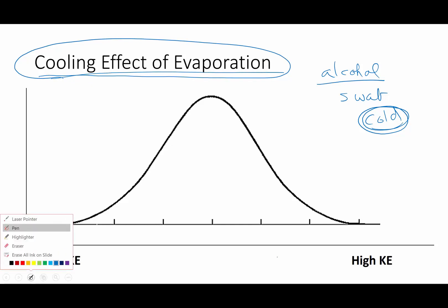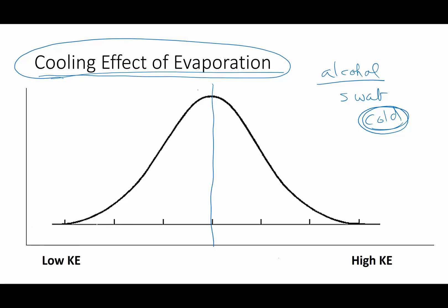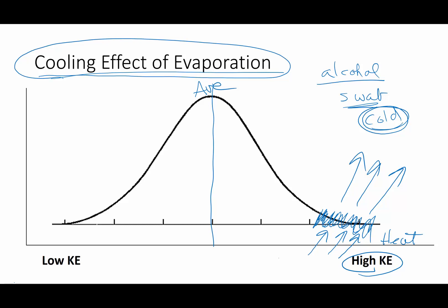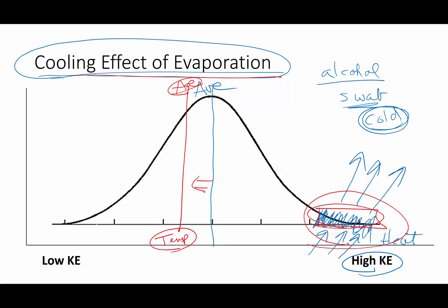Here's what occurs. Temperature is the average internal kinetic energy of the molecules of a substance. When we swab alcohol on your arm, those alcohol molecules absorb heat from your arm, and the high kinetic energy molecules leave your arm. What happens is the overall average kinetic energy becomes less. If the average kinetic energy is the temperature, and you take out the hot ones, the temperature goes down. That's called the cooling effect of evaporation.